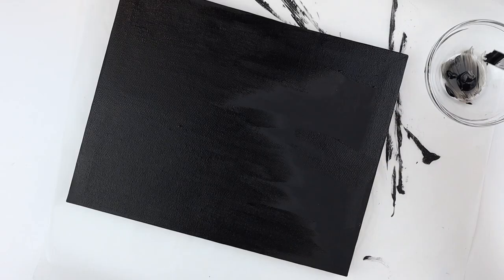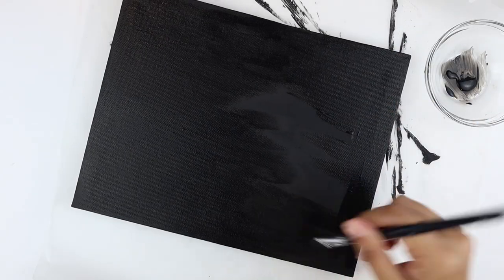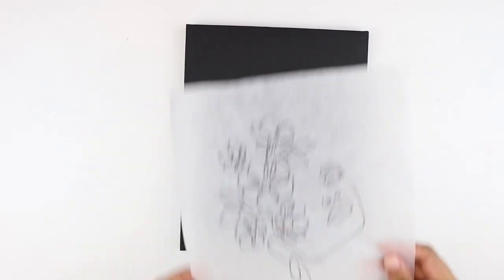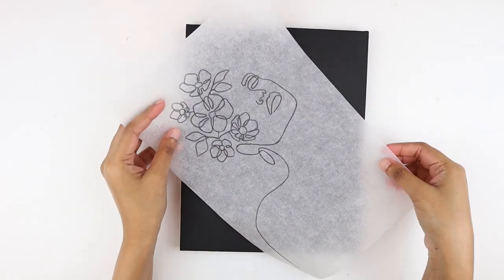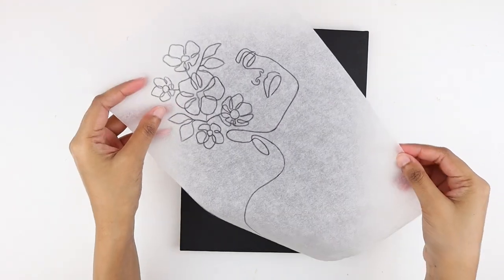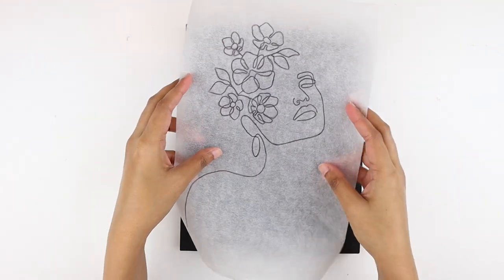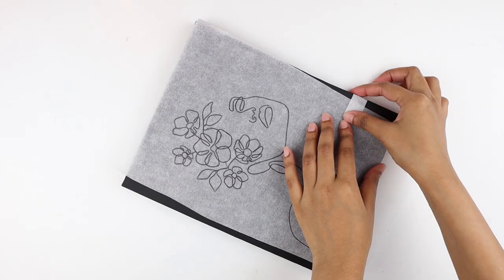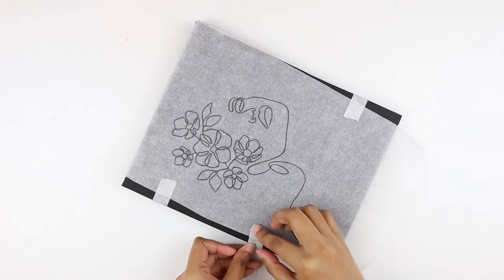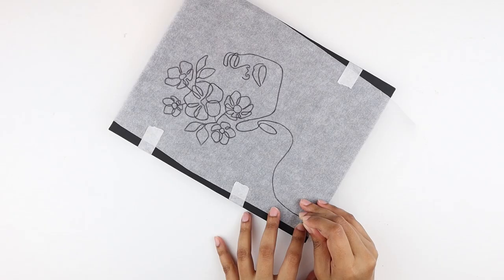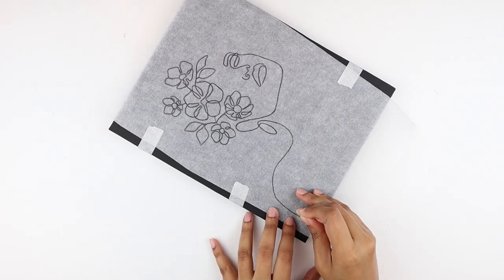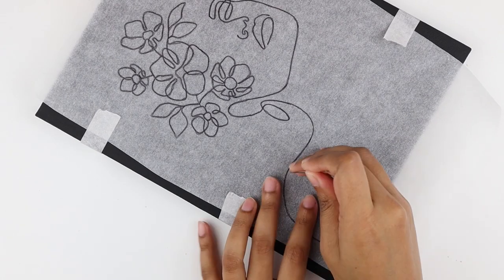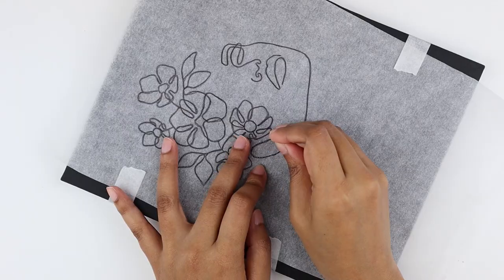So I went on Pinterest to look for some line art inspirations, and I made a sketch of this beautiful line art. I will make sure to leave the link to the original pin in the description box. I positioned the art in the center and then taped it down to hold it in place. Next I used my needle to poke holes on the canvas. I followed the line art and tried to equally space them out. I tried to leave around a half centimeter space between each piercing.